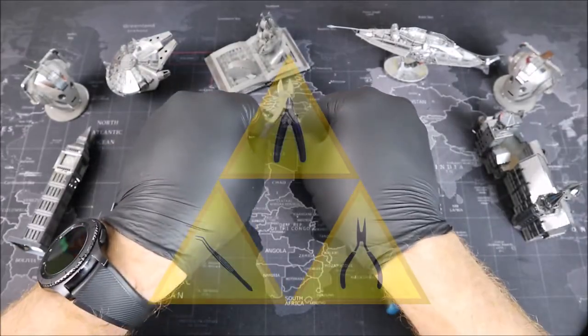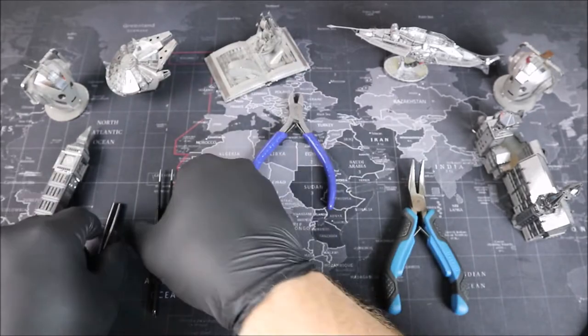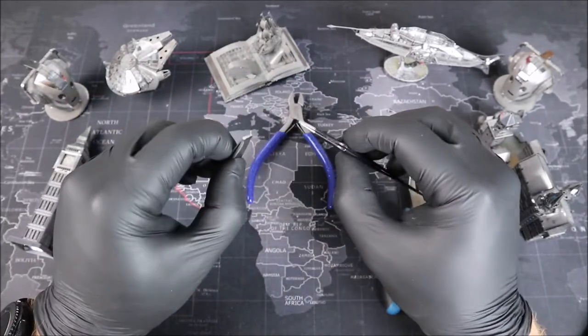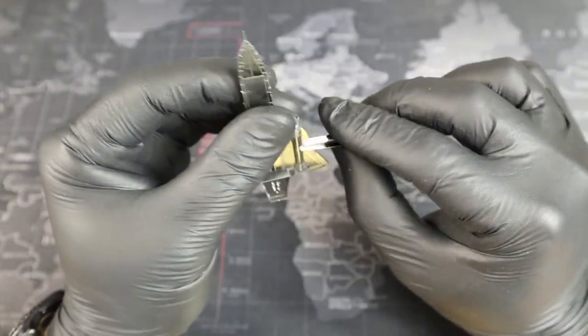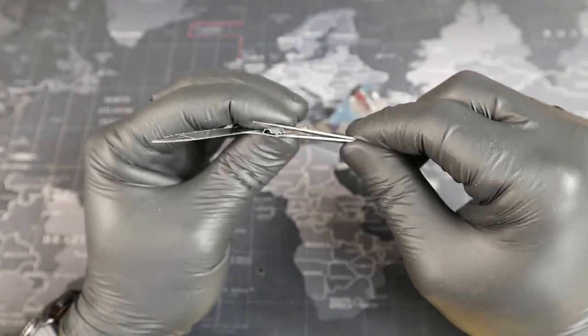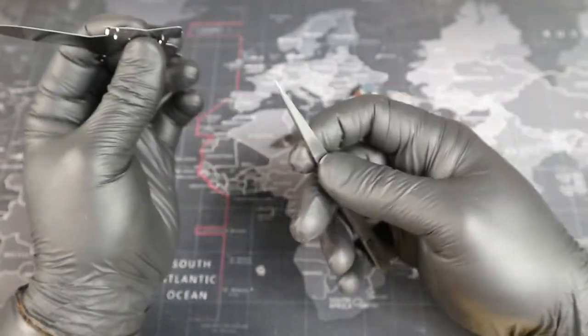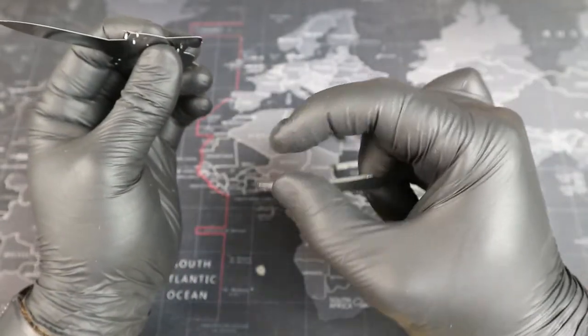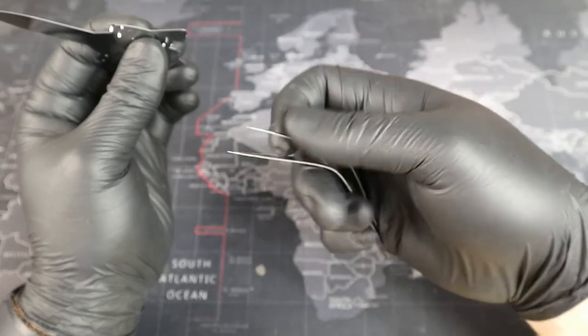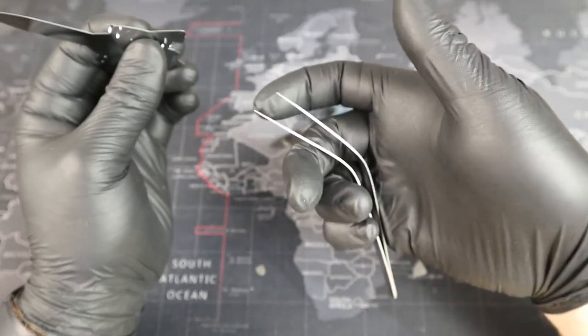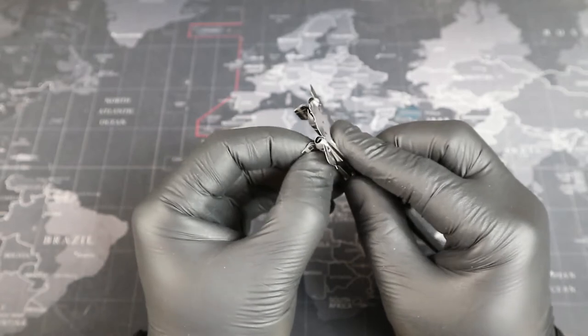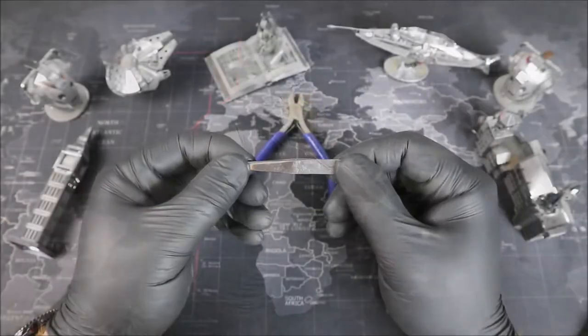Second in our Triforce, we have the Mighty Tweezers. With these metal-grabbing tools, we will shape our creations to their full potential. It's important to know that not all tweezers are the same, and some might be too weak to build with. A good, strong set of tweezers will last you forever.